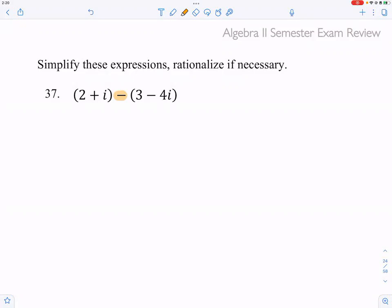So all you need to do is combine like terms. That is 2 plus i, and you have to distribute the minus into the parentheses, so you have minus 3 and plus 4i, because negative times negative is positive.